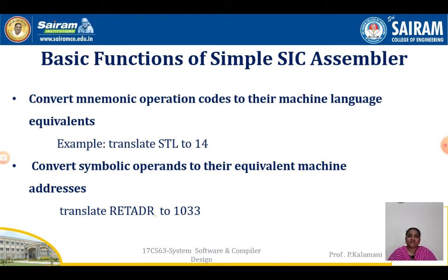Next, we will see the basic functions of a simple SIC assembler. The first function is it will convert mnemonic operation codes to their machine language equivalents. For example, the instruction STL will be translated to 14 — that is the equivalent machine language value of STL. And it will convert symbolic operands to their equivalent machine addresses.